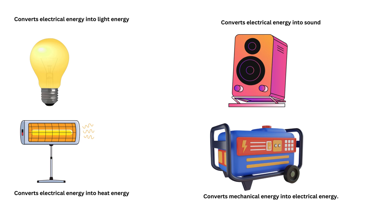Each device converts electrical energy from one form to another — they are called energy changers. For example, the bulb converts electrical energy into light energy, the speaker converts electrical energy into sound, a heater converts electrical energy into heat energy, and the generator converts mechanical energy into electrical energy.